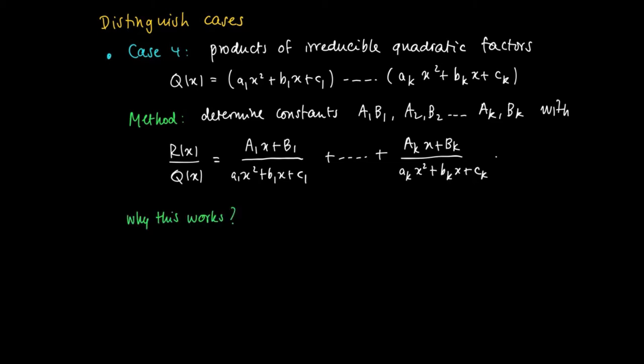Why this works? Why should we do this? We've already seen that any of such terms, encircled by this blue line, has a primitive which is a combination of a logarithm of the quadratic term and some arctangent form.